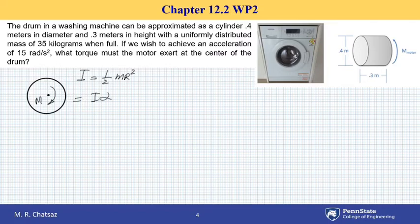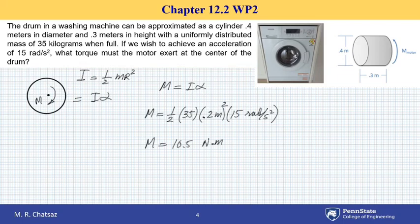m equals I alpha. Plugging in the given data: one-half times mass of 35 kilograms, times radius which is half of the diameter or 0.2 meters squared, times angular acceleration of 15 radians per second squared. This gives us a value of 10.5 newton meters, which is the torque needed to be applied to the drum to achieve the desired acceleration.